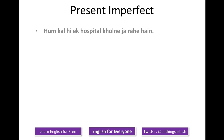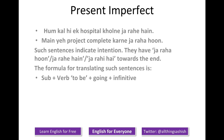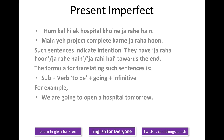Let's look at some more present imperfect sentences. 'Hum kal hi ek hospital kholne ja rahe hai.' 'Main a project complete karne ja rahe ho.' Such sentences indicate intention. They have 'ja rahe hoon', 'ja rahe hai' towards the end. The formula for translating such sentences is: subject plus verb to be plus going plus infinitive. For example: we are going to open a hospital tomorrow. I am going to complete this project.